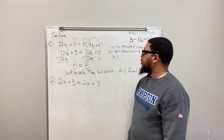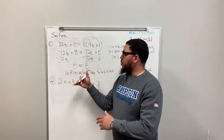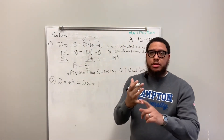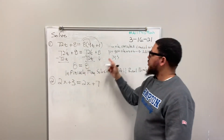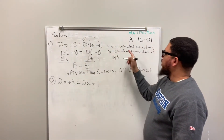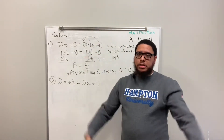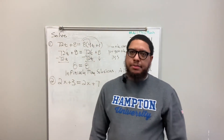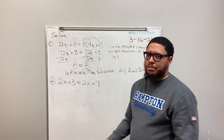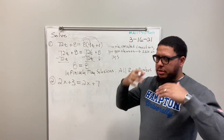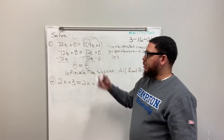So again, try to solve for the variable. If your variable cancels out and you end up with a true statement, then the answer is that there are an infinite number of answers — a whole bunch of answers. That's the answer. Sounds strange, but it'll start to make more sense once you get more familiarity with these types of problems.